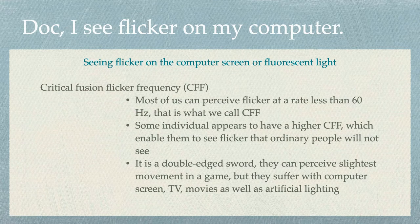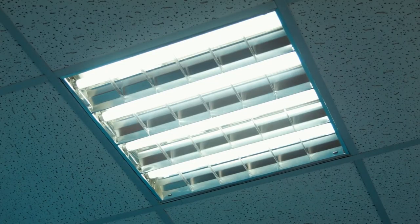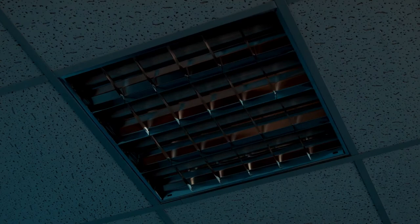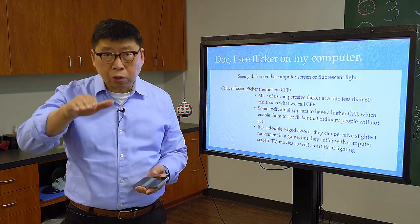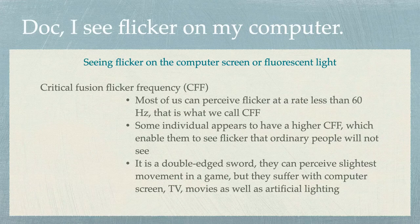Let me explain. We have a theory called critical flicker fusion frequency, or CFF. What that means is how much frequency can your eye tolerate and still perceive it as a steady image. For example, if your fluorescent light is dying, you'll notice that it flickers because it flickers at a much slower rate. Normally, the CFF is about 60, meaning that if your refresh rate is about 60 frames per second, you're able to perceive it as a normal, steady image.